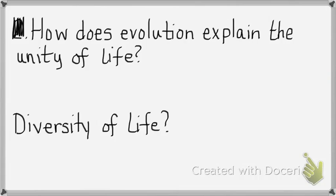How does evolution explain the unity of life? Why do all cells have DNA, messenger RNA, transfer RNA, rRNA, the same genetic code, the same amino acids, and mostly the same proteins? Because all life has common ancestry.